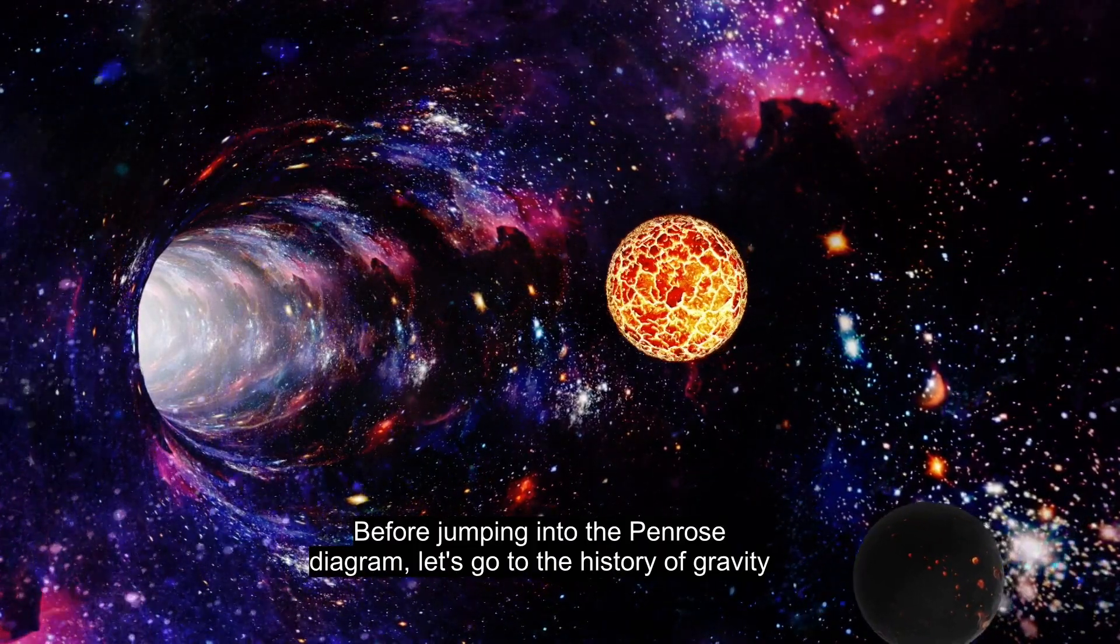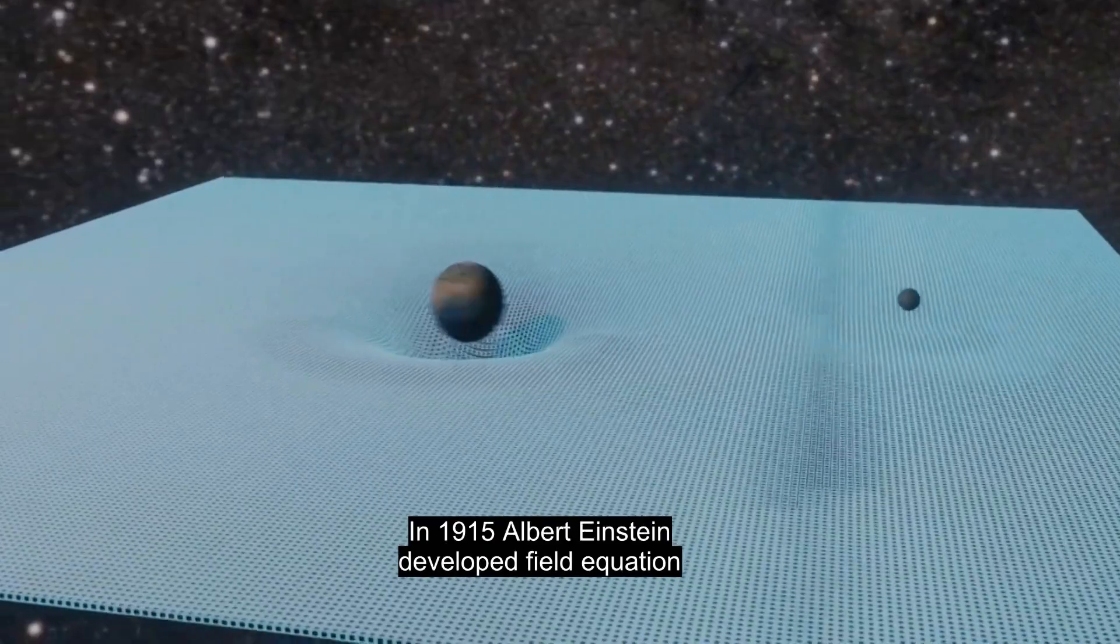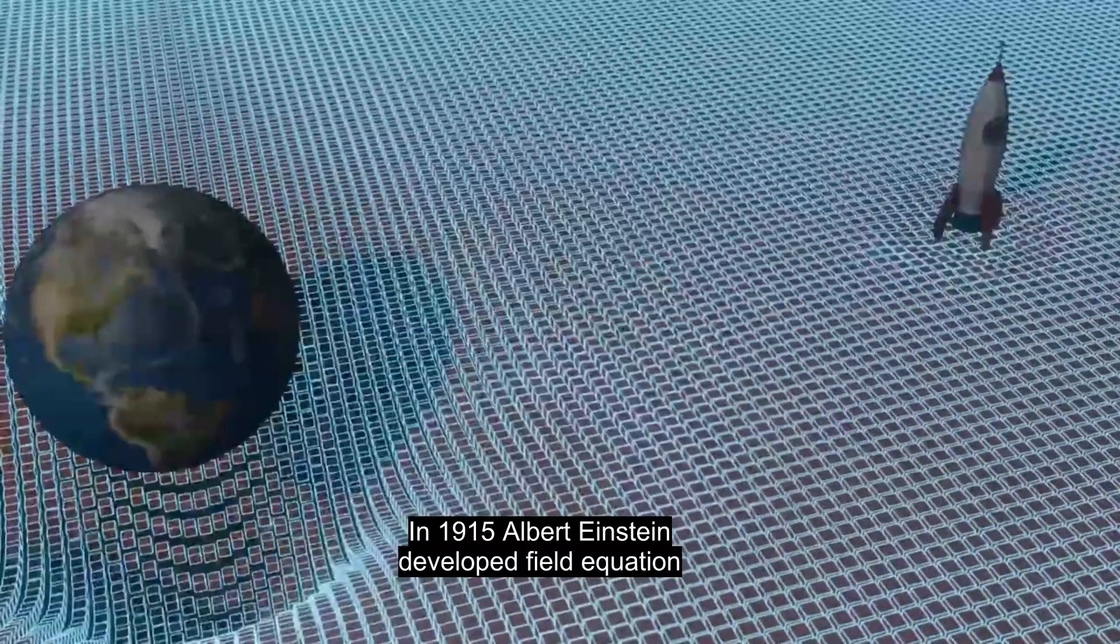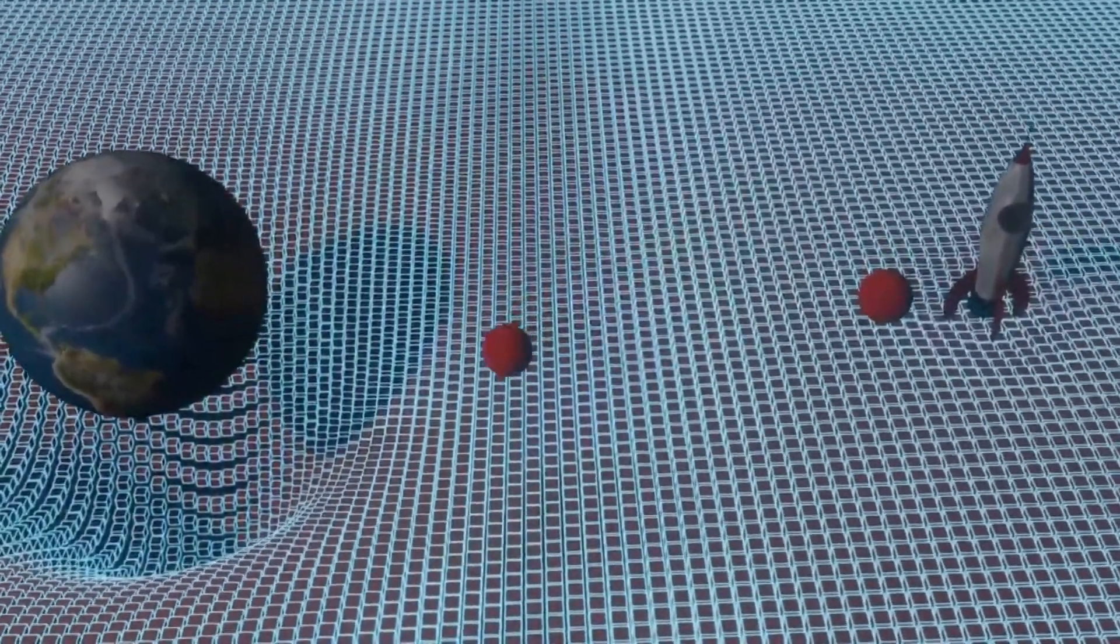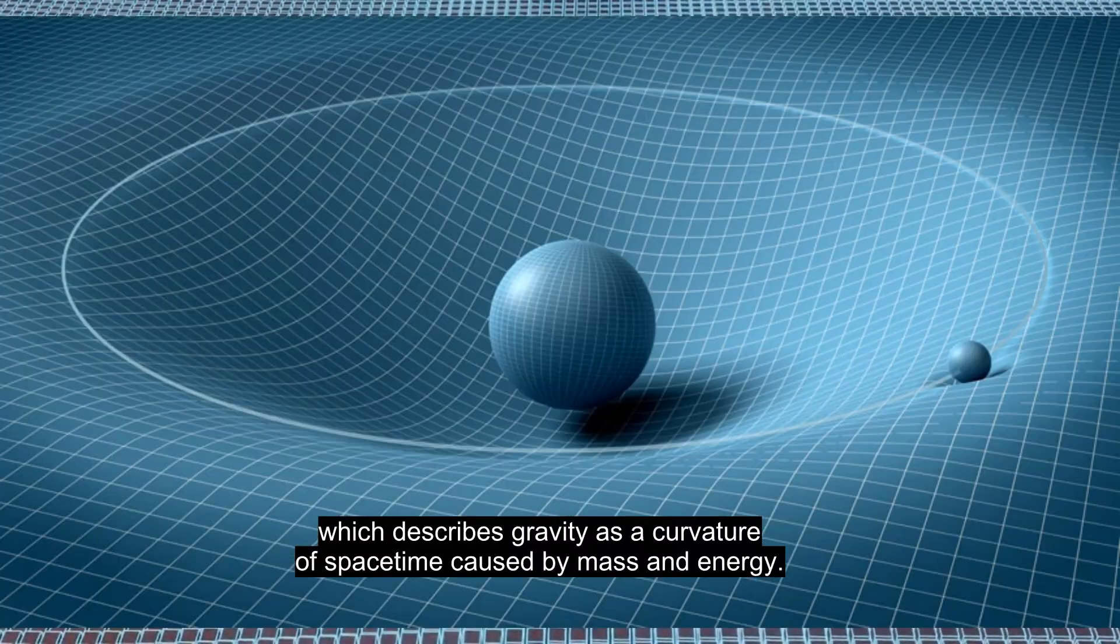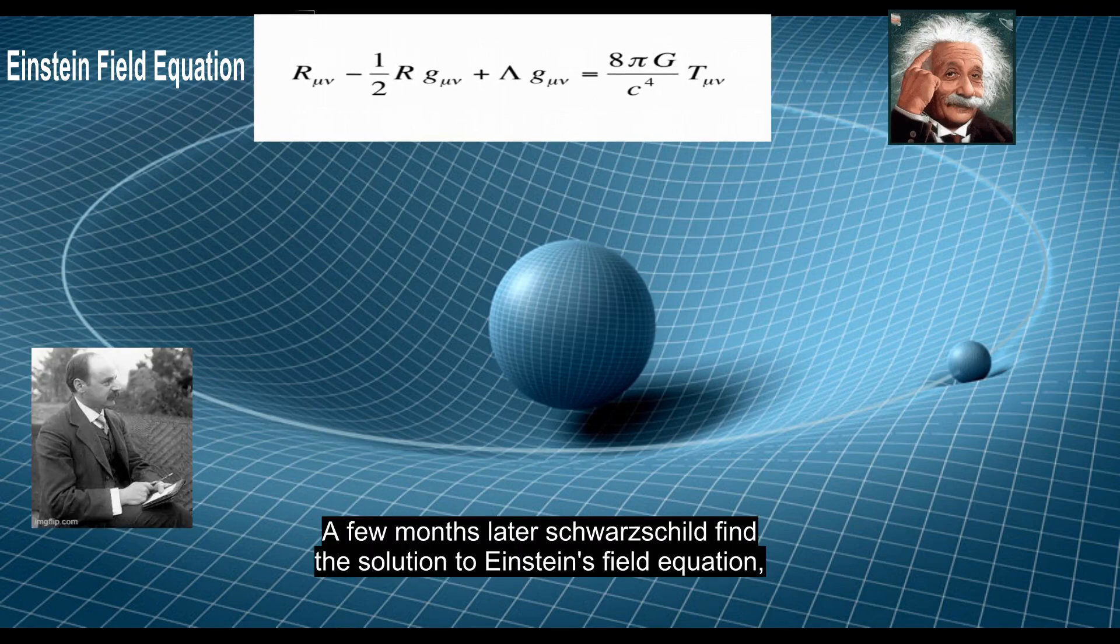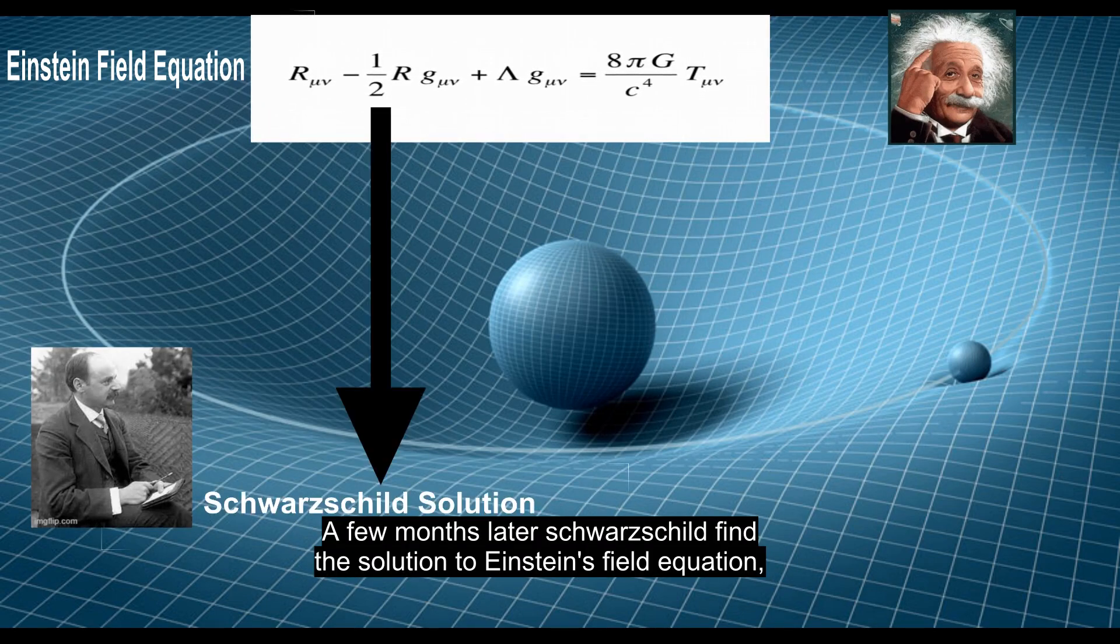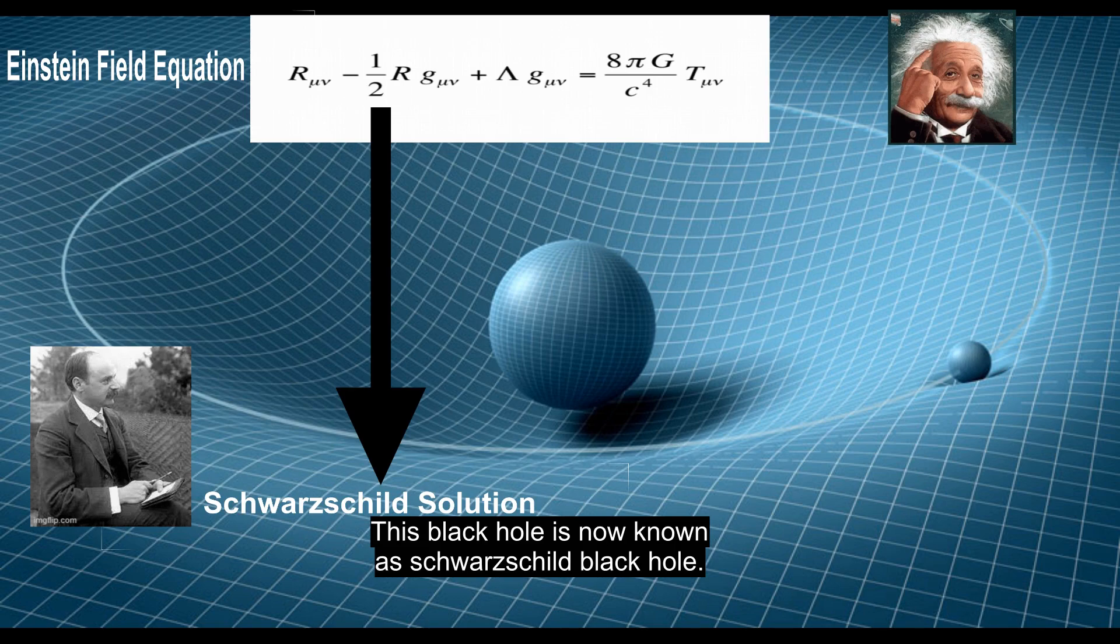Before jumping into the Penrose Diagram, let's go to the history of gravity and black holes. In 1915, Albert Einstein developed a field equation known as Einstein's field equation, which describes gravity as a curvature of spacetime caused by mass and energy. A few months later, Schwarzschild found the solution to Einstein's field equation. That solution basically describes an uncharged, non-rotating black hole, now known as the Schwarzschild black hole.